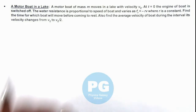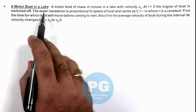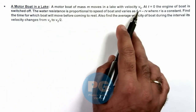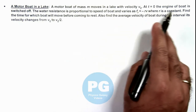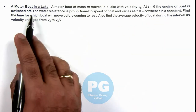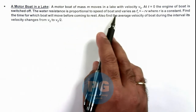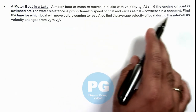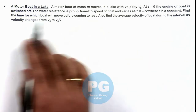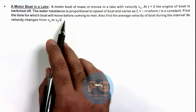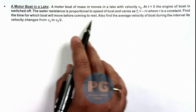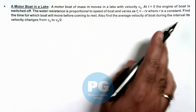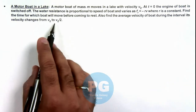This illustration is about a motorboat in a lake. A motorboat of mass m moves in a lake with initial velocity v₀. At t = 0, the engine of the boat is switched off, and the water resistance is proportional to the speed of the boat, varying as F_r = -rv, where r is a constant. We are required to find the time for which the boat will move before coming to rest, and also the average velocity of the boat during the interval its velocity changes from v₀ to v₀/2.